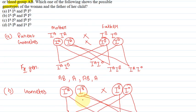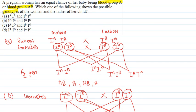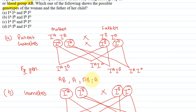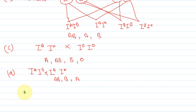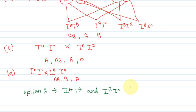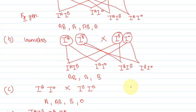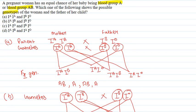The correct answer of this question is option A. We can clearly see that the progeny is AB, A, AB, A — so the probability is equal that the baby will be either AB or A blood group. So the parent genotypes should be IA, IA and IBIO. Option A is the correct answer. I hope you understood the explanation. Thank you.